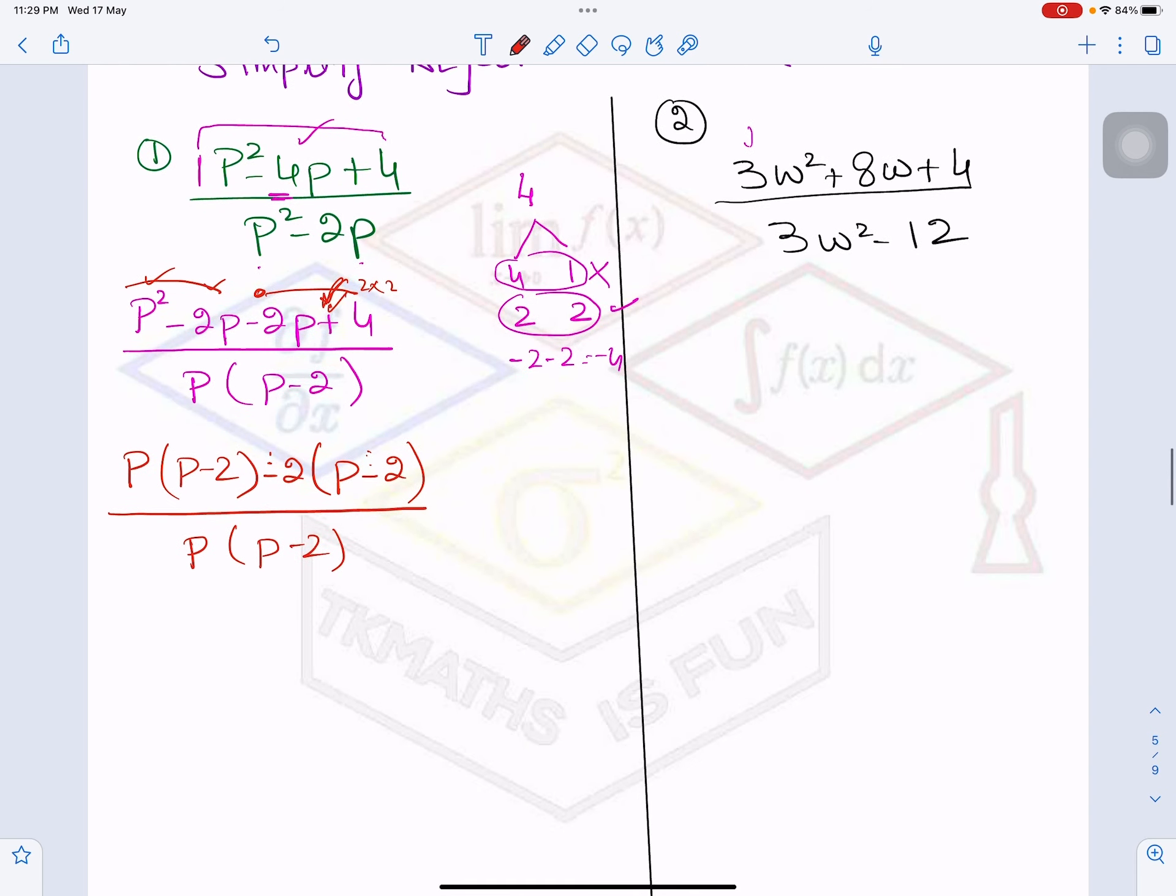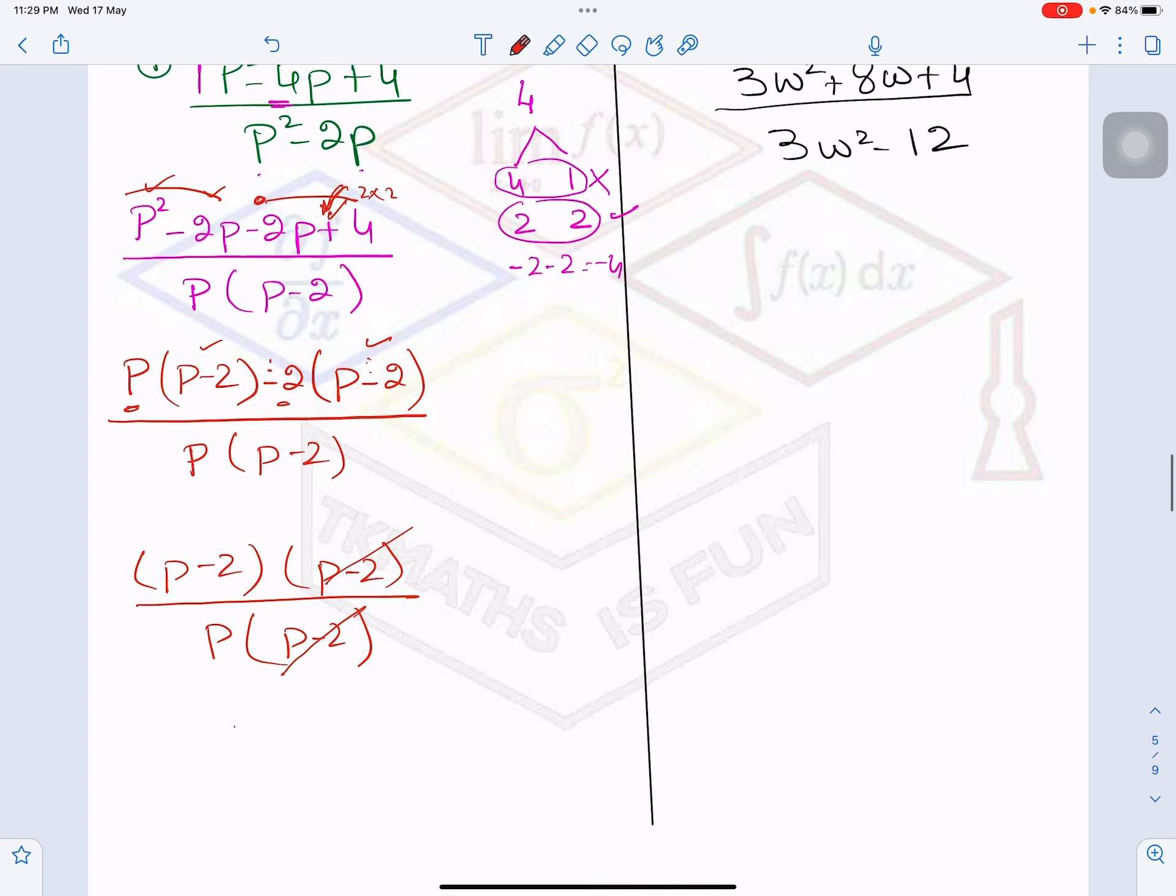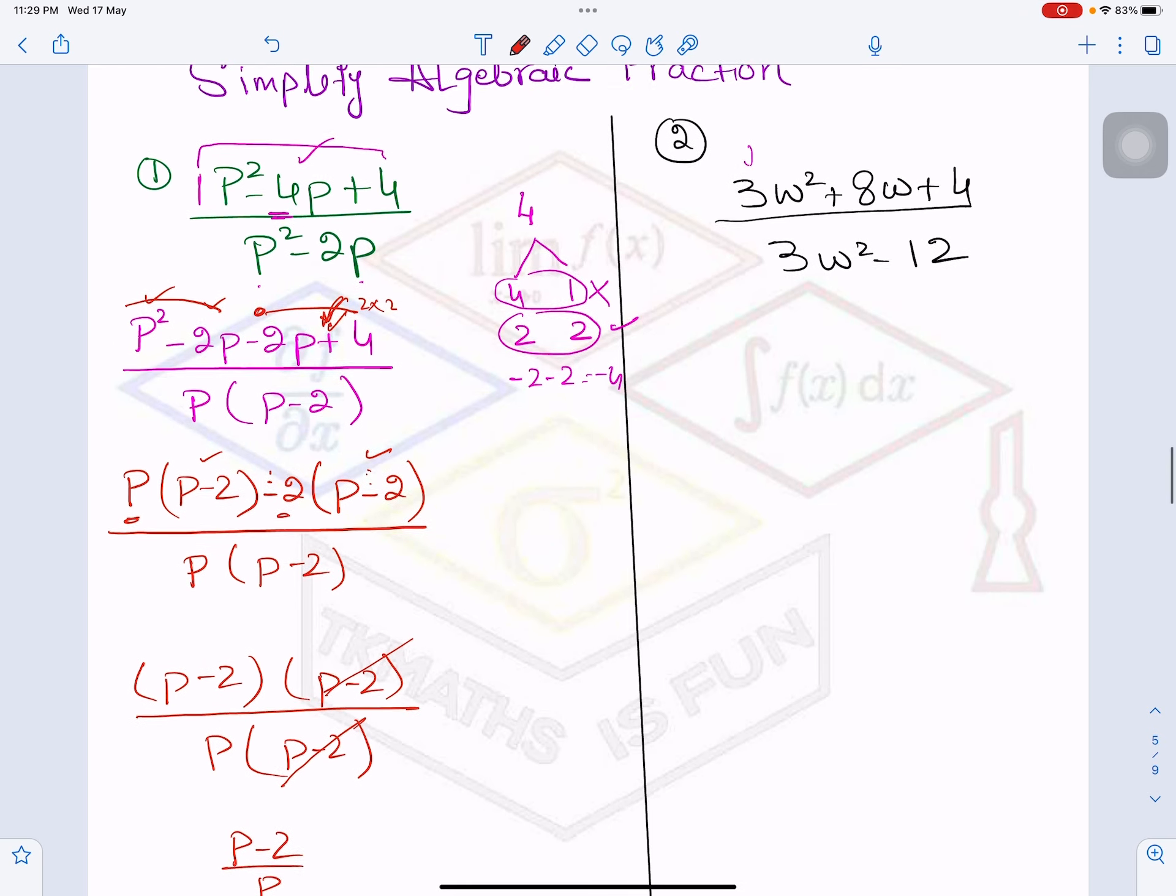Denominator you will write as it is. Now in the numerator you can see the common term is P-2. This one and this one, and from here P-2 is also your another factor. So now if you see you can cancel it and you will get simplified form (P-2)/P.